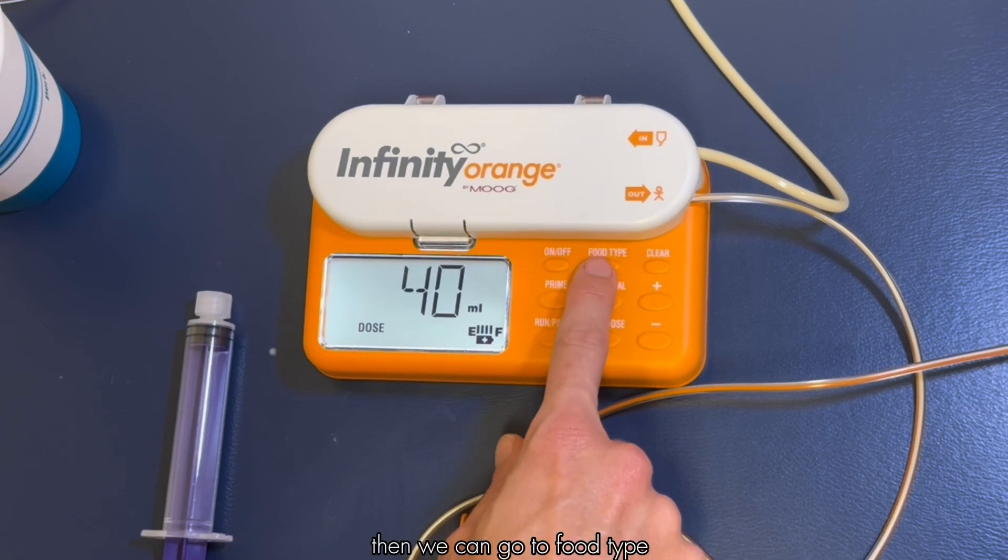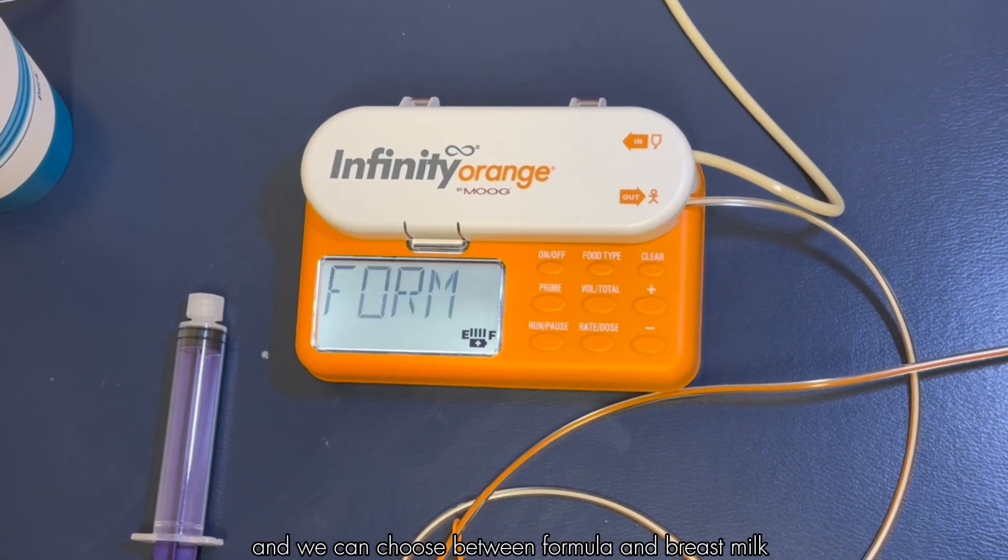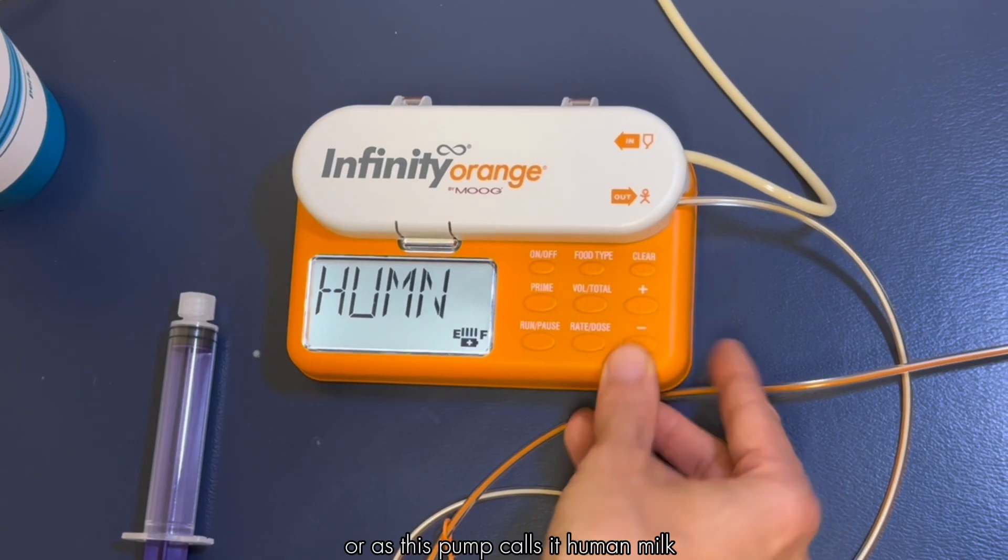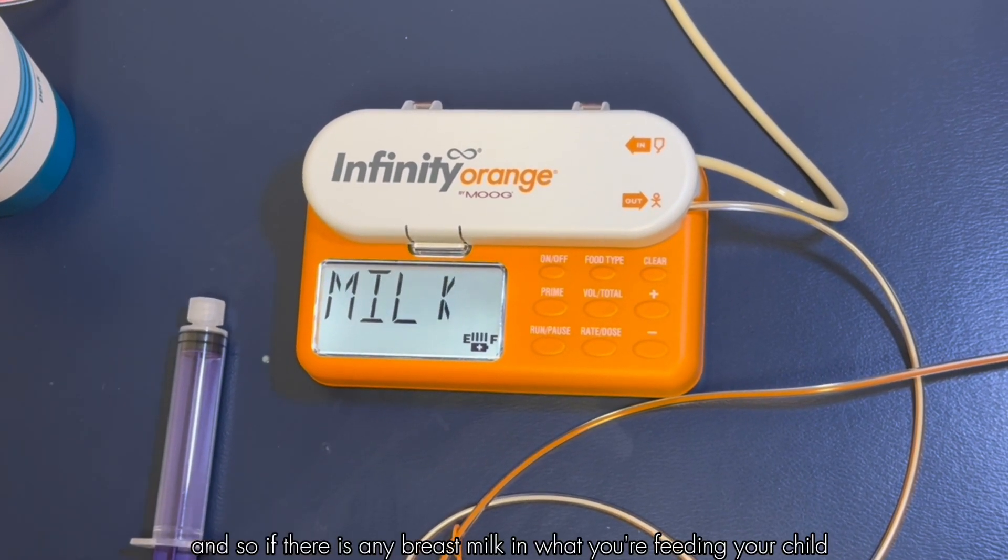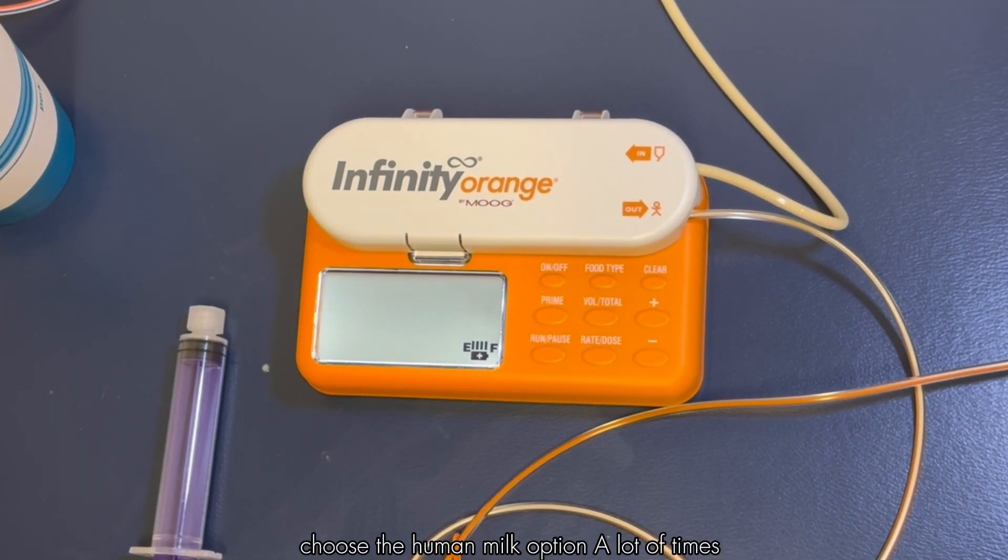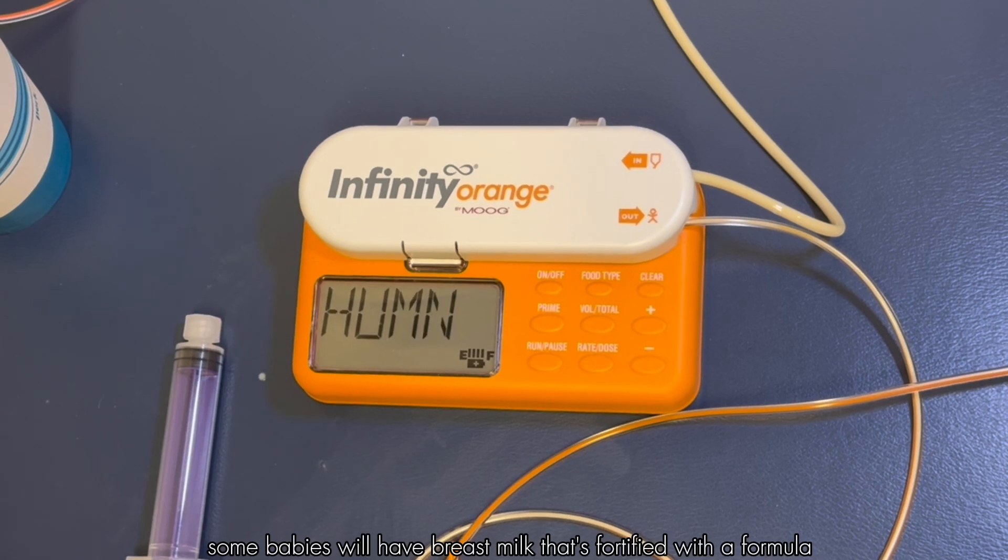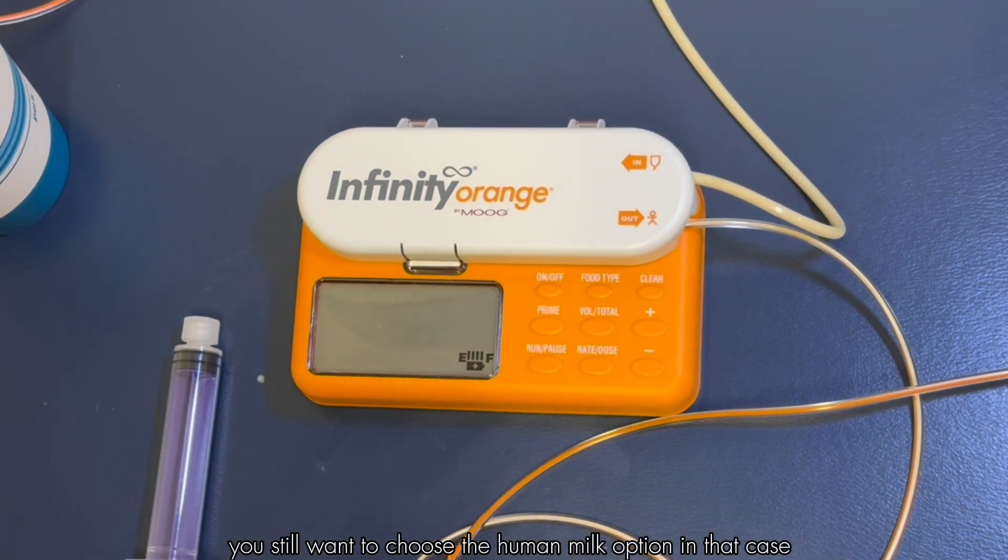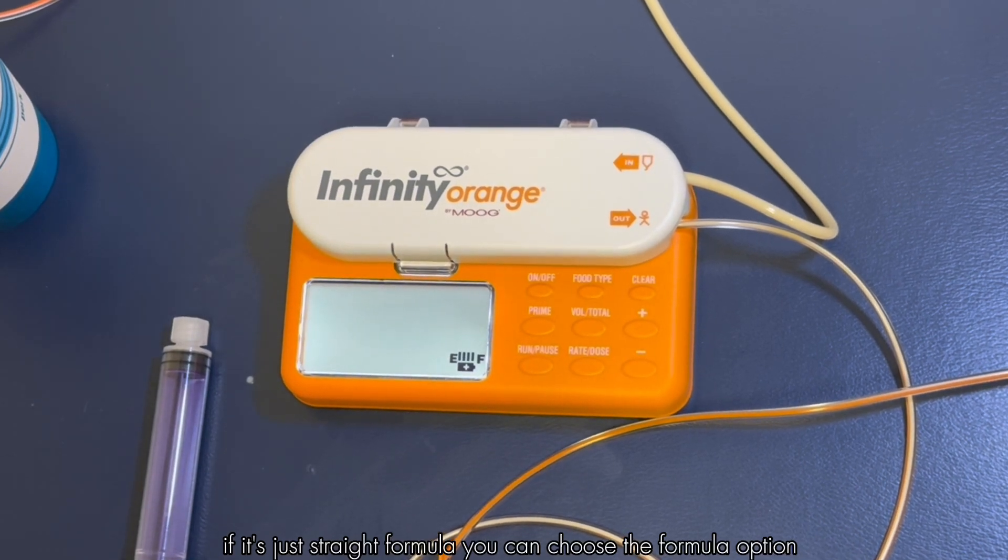Then we can go to food type. That's our top center button and we can choose between formula and breast milk or as this pump calls it human milk. If there is any breast milk in what you're feeding your child, choose the human milk option. A lot of times some babies will have breast milk that's fortified with a formula. You still want to choose the human milk option in that case. If it's just straight formula you can choose the formula option.